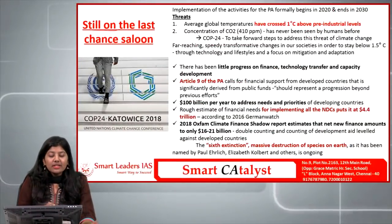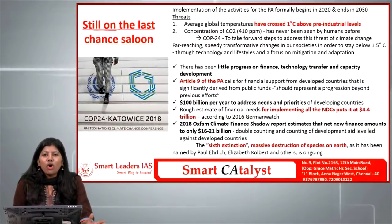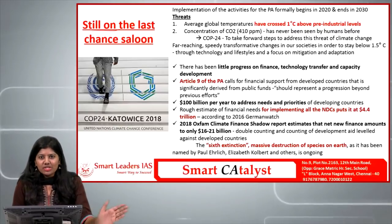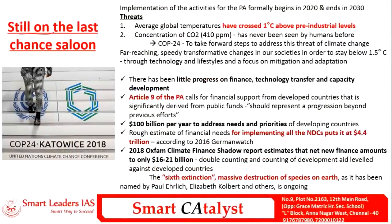The next article is still on the last chance saloon. We know that the climate is changing and global temperatures are rising, and to tackle that, the COP24 meeting of the UNFCCC is going on. As per the Paris Agreement 2015, implementation legally begins in 2020 and should end in 2030 — this is different from the SDGs which run from 2015 to 2030.